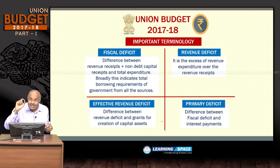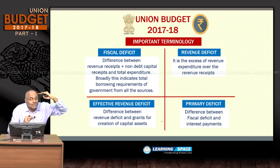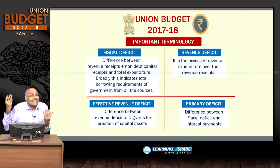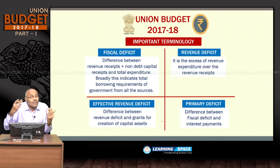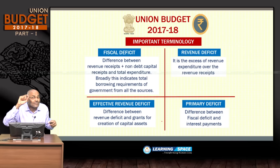Revenue deficit is the excess of revenue expenditure over revenue receipts. When revenue expenditure is more than revenue receipts, it indicates that some capital receipts — which are normally meant for creation of assets — are going toward revenue expenditure instead. Capital expenditure is basically for creation of assets, so this revenue deficit is significant.